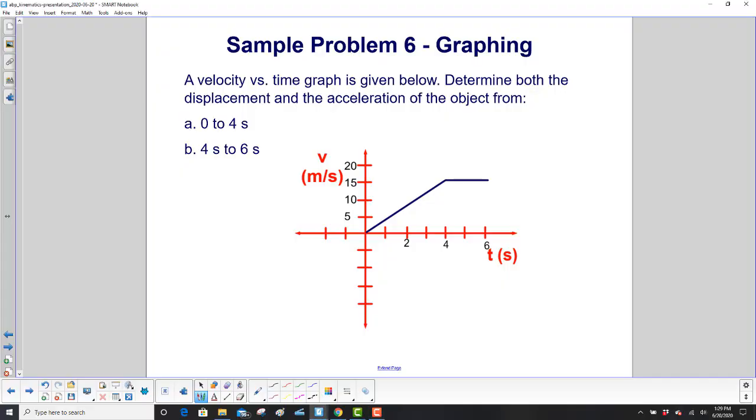Another graphing problem, but it's different. Why is it different? It's a velocity time graph. We have velocity plotted against time.